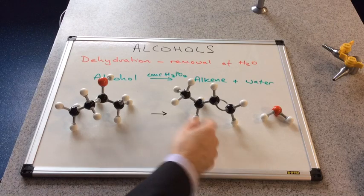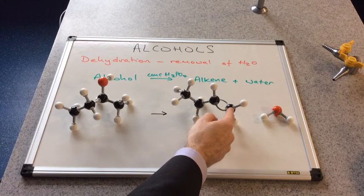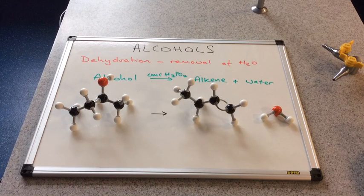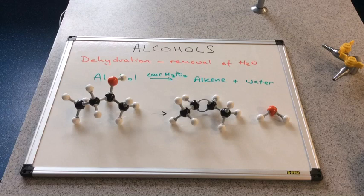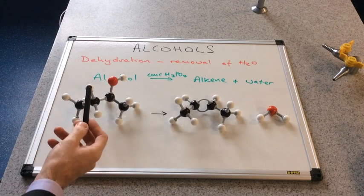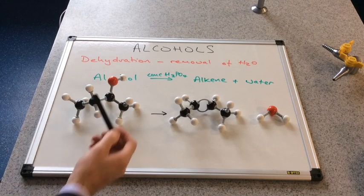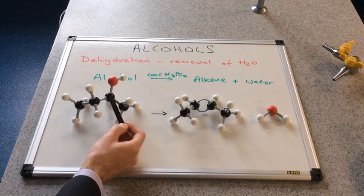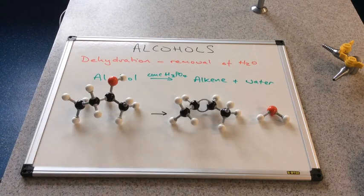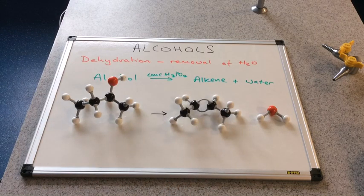E/Z isomerism is not possible with but-1-ene because of the two hydrogens on one of the carbons in the double bond, so but-1-ene is product number one. The other possible product comes from removing a hydrogen from the other adjacent carbon, so the double bond forms there instead, and we create but-2-ene along with the eliminated water molecule.